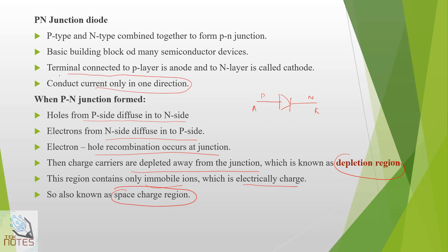We have to use biasing. What is biasing? There are two types: forward bias and reverse bias. We will cover forward bias and reverse bias in the next class.